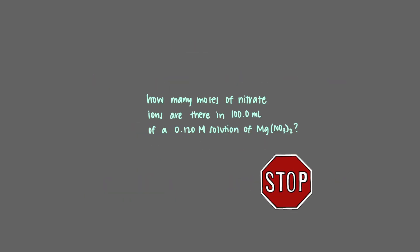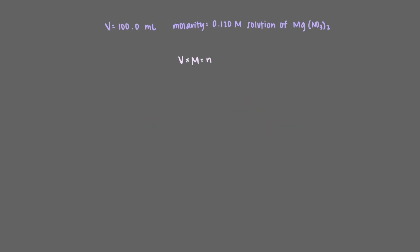How many moles of nitrate ions are there in 100.0 mL of a 0.120 molar solution of magnesium nitrate? Like before, we will use the given molarity and volume to calculate the amount in moles of magnesium nitrate. By multiplying the molarity by 0.100 liters, we get that there are 0.012 moles of magnesium nitrate in the solution.